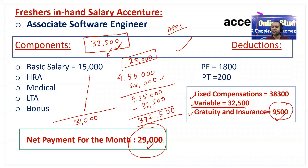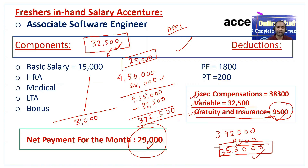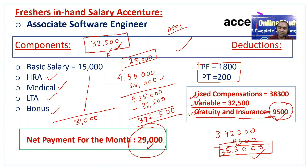So subtracting the variable, you are left with around 3 lakhs 92,000. Then 95,000 rupees will be deducted for your gratuity and insurance, which you will also not be getting in hand. So that brings you to approximately 3 lakhs 83,000 rupees eligible in hand. All other things like gratuity, variable, and one-time joining bonus are deducted. After that, PF and professional tax will also be deducted.